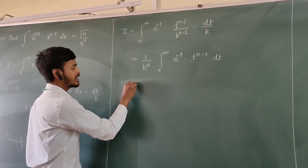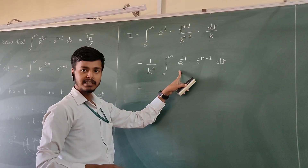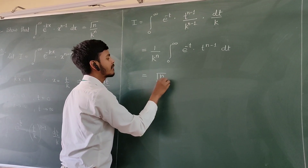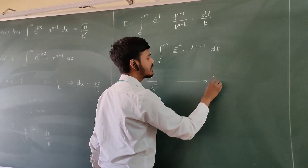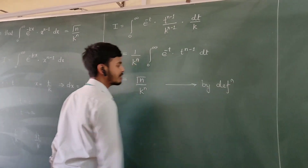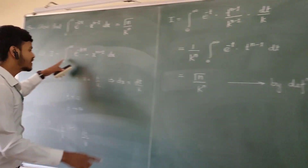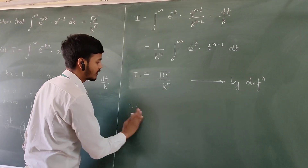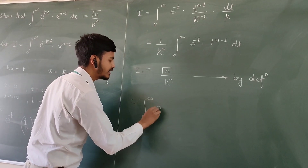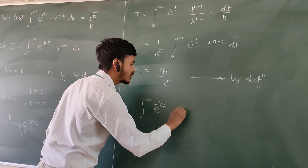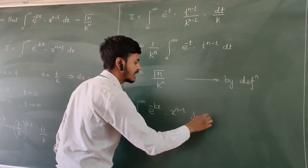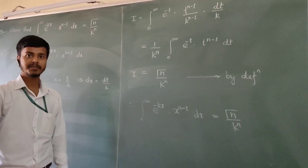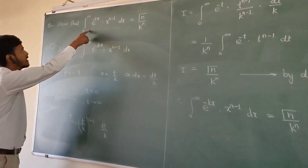As you know, this integral is exactly the definition of gamma n. So this equals gamma n upon k to the power n. Therefore, we conclude: i equals the integral from 0 to infinity of e to the power minus kx into x to the power n minus 1 dx equals gamma n upon k to the power n. This is a simple proof of this result.